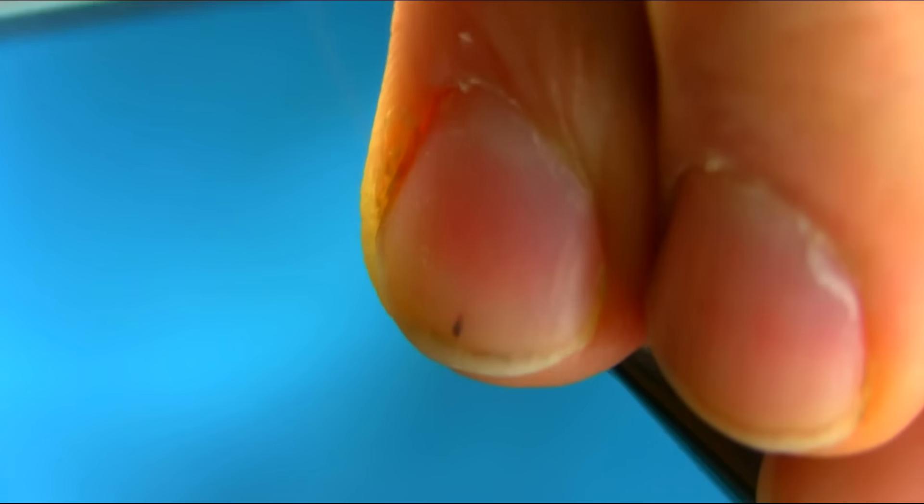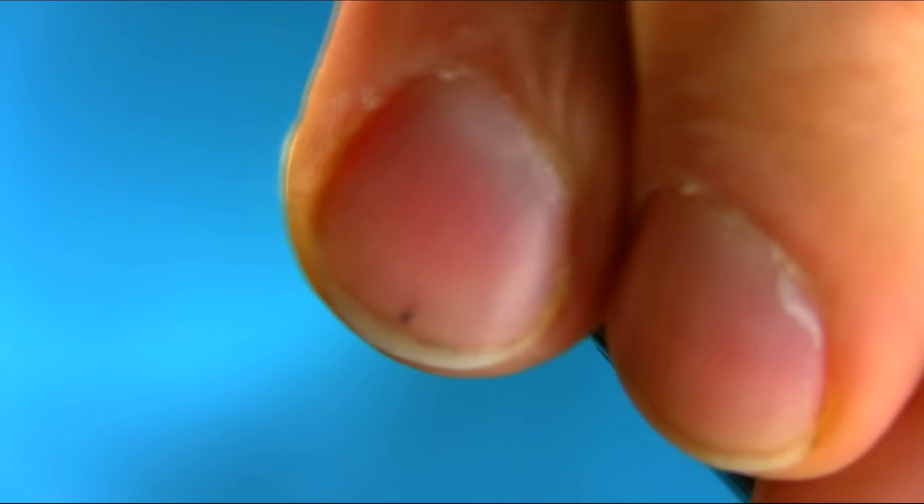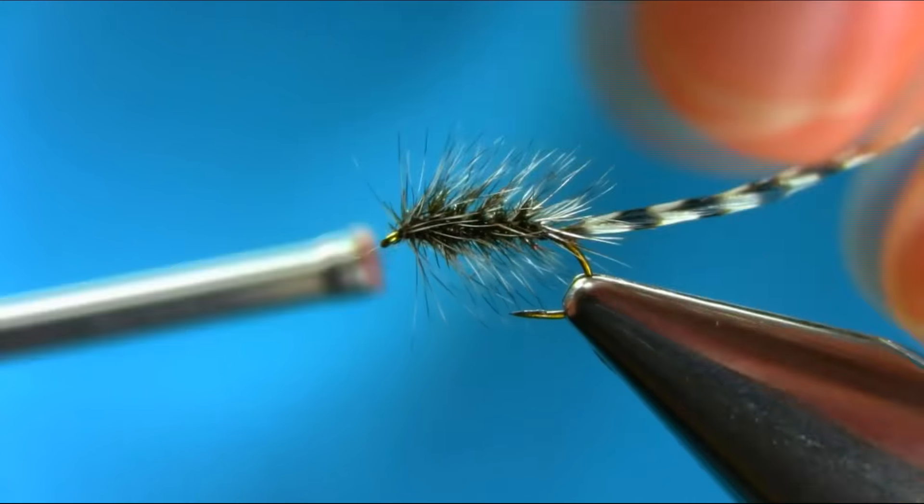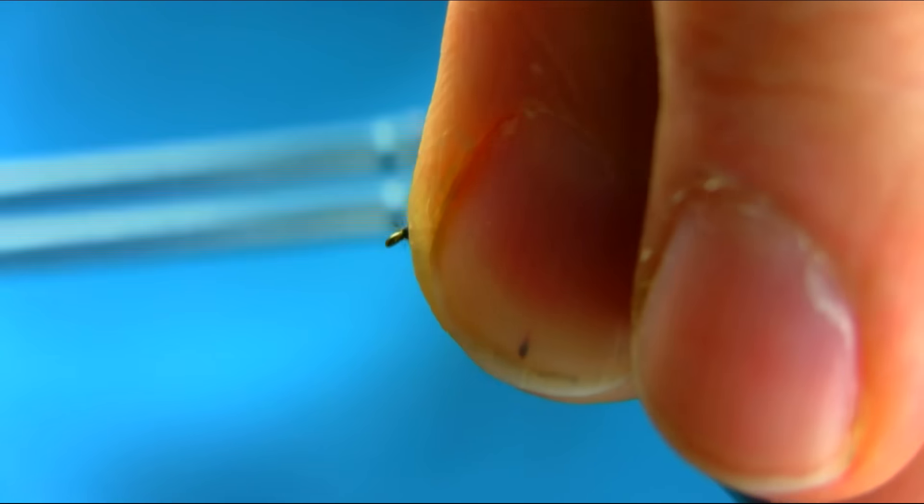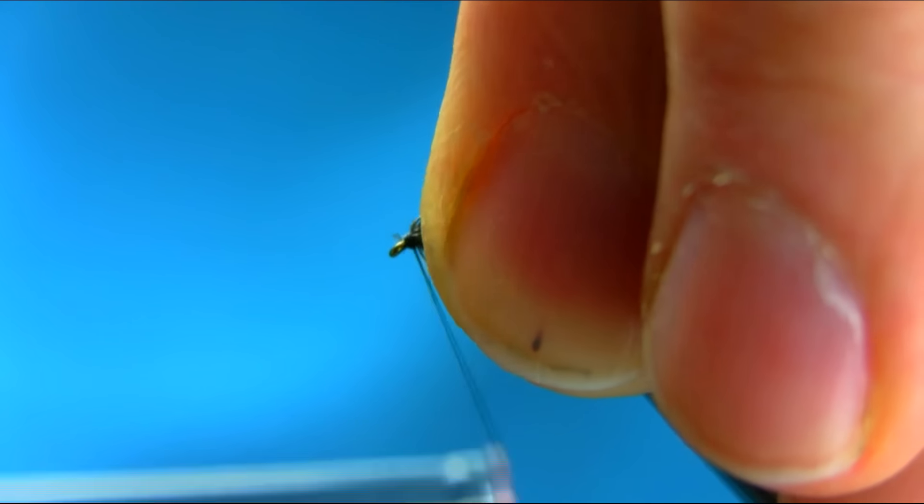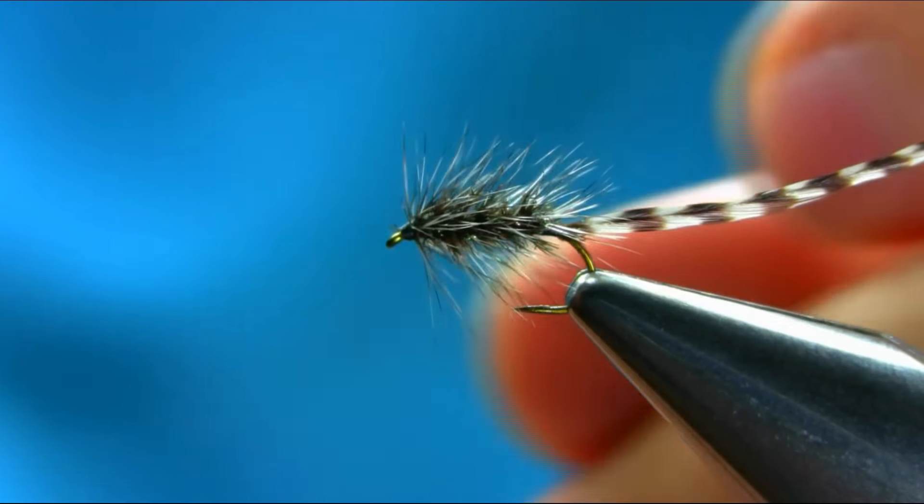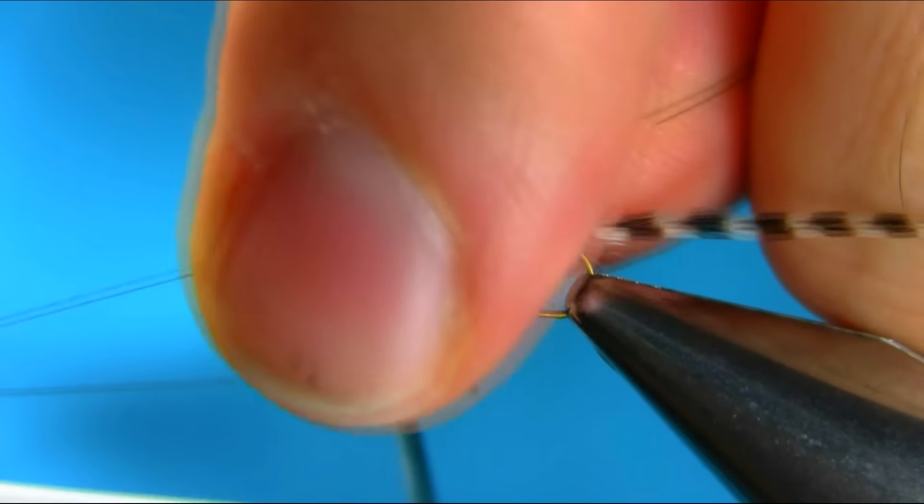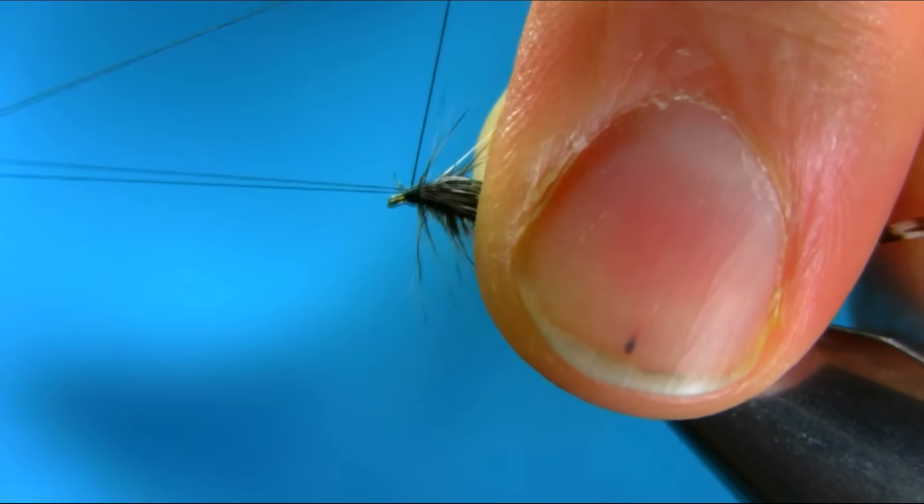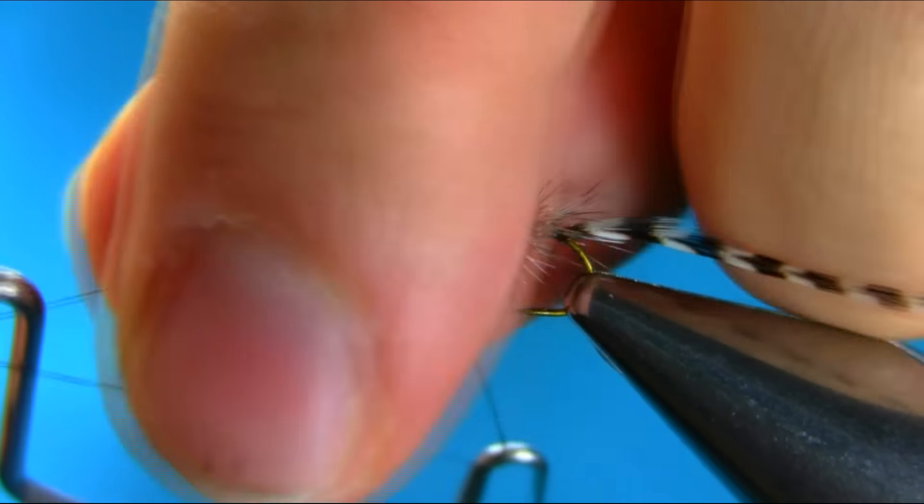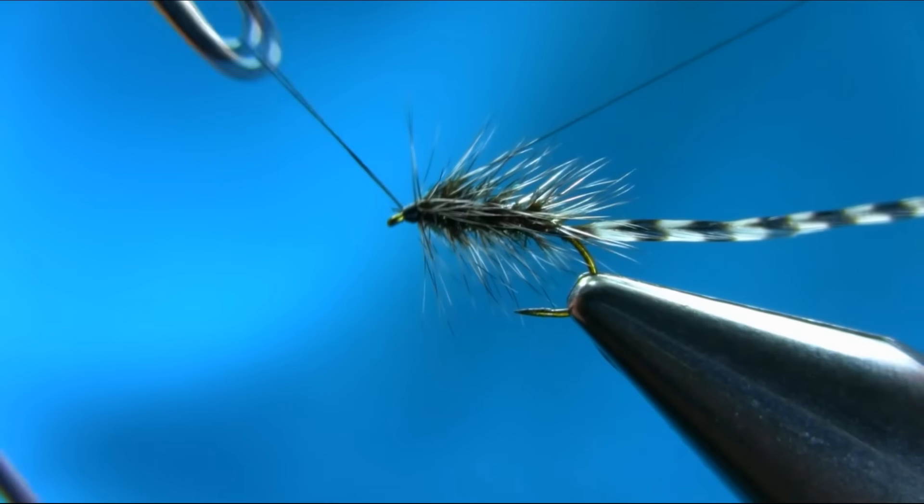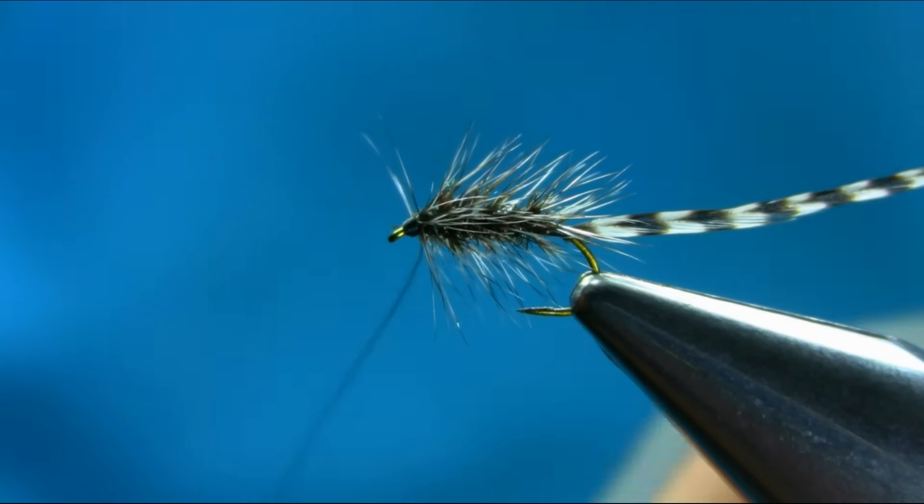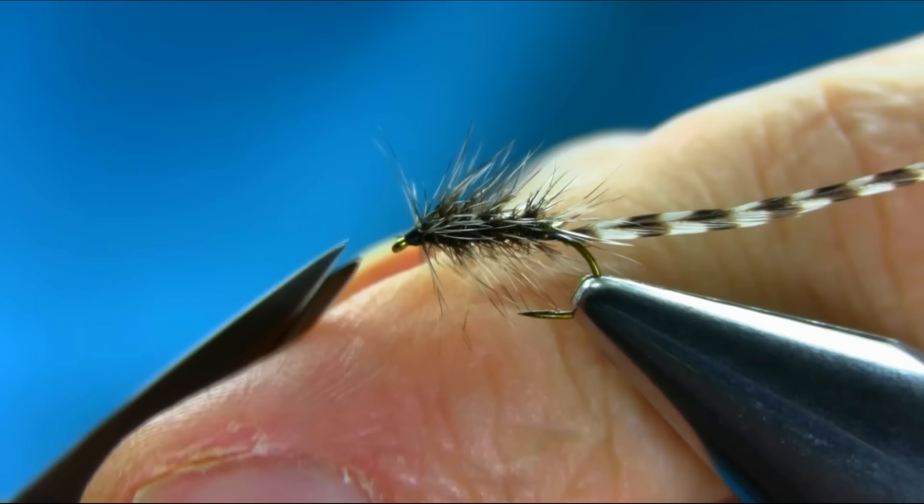But then you remember if you put your hackle and then your peacock coming the same way, the hackle actually moves about on the shank back and forward and then breaks. This way you kind of lock and secure everything.